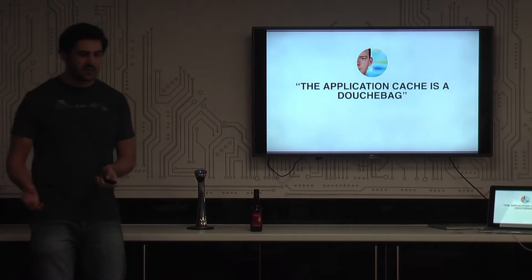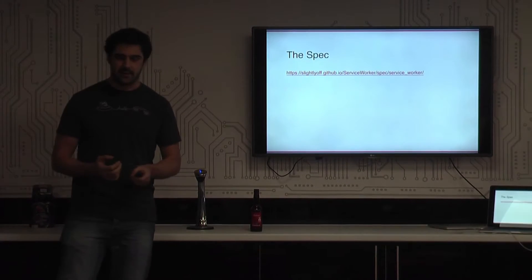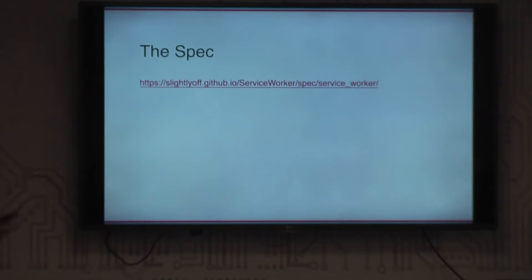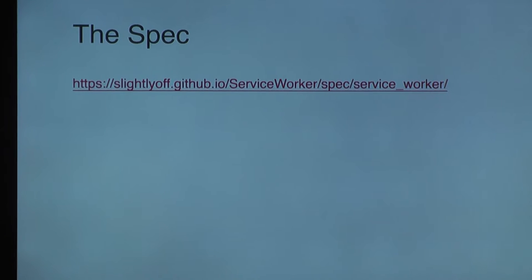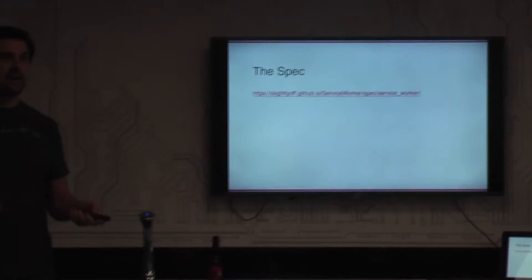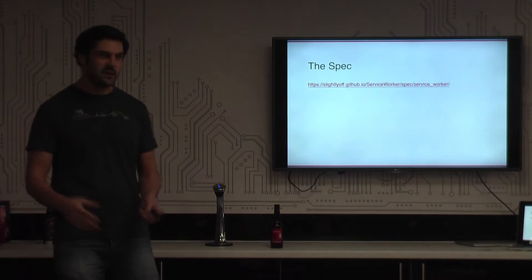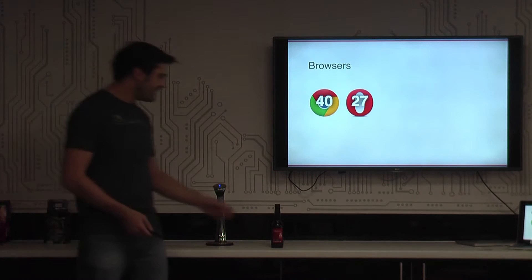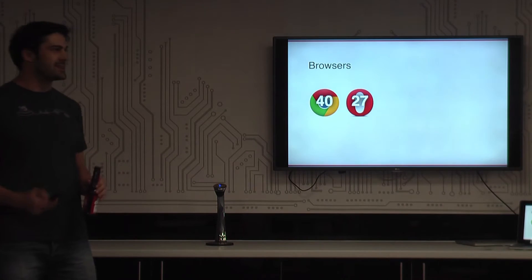Almost two years ago, at the start of 2014, the spec was started for the service worker by Alex Russell at Google, and him and Jake worked on that and gathered support until the start of 2015, when it finally dropped into the first browsers without any prefixing or flags — the service worker arrived in Chrome 40 and Opera 27, the first time we had a proper way to make sites work well offline.